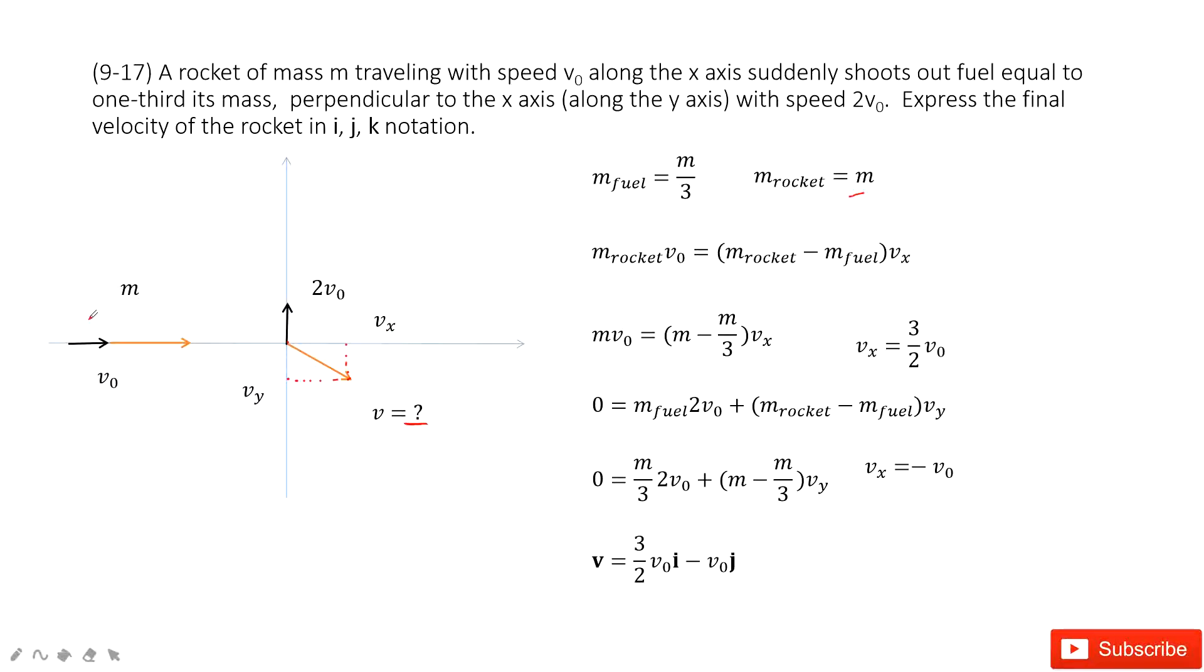So the momentum, we can write the x component and y component. First thing we look at is the x component. The initial momentum in x component is m rocket times v0. And the final part is this orange part vx. So this orange is just the rocket minus the fuel, the rest part of the rocket.